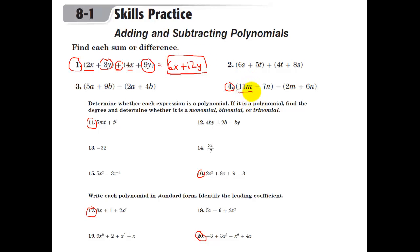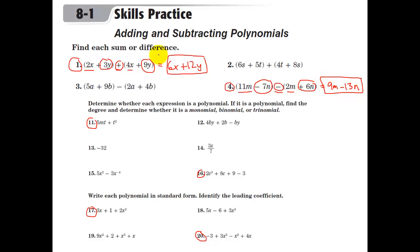Next one: 11m minus 2m — 11 minus 2 equals 9, so that gives us 9m. Then we have negative 7 minus 6, which is negative 13, and the variable is n — so negative 13n. When you have stuff in parentheses, it's absolutely key that whatever minus sign or plus sign is there, everything coming after it is either subtracted or added. Beyond that, you just combine like terms. As I did these problems, I underlined and circled the pieces I was using — that helps you not leave anything off. So underline, circle, or cross out terms as you go.